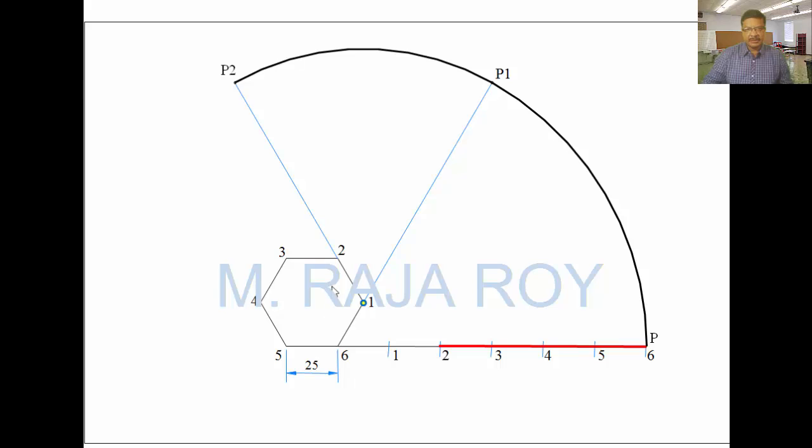Now, take this point 1 as center up to here as radius, draw an arc up to P2 like this. Then next, take P to 3 distance, P to 3 distance. That distance you have to mark after this point 3 by extending 2, 3 like this, this is P3. Next, take 2 as center, 2 to P2 radius, draw an arc. Next, take P to 4 distance. Mark that after 4 by extending this 3, 4 like this. This is P4. Take 3 as center, 3 to P3 radius, draw an arc.